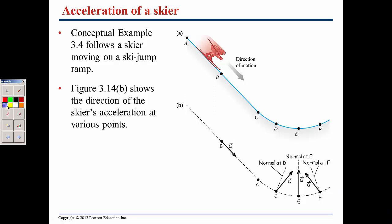If we consider the acceleration of a skier going downhill and look at his velocity vector at various points, starting from rest, his velocity vector increases, and the acceleration must be in that direction of motion. It's going to be even longer at point C because he is continuing to accelerate in that direction due to gravity.